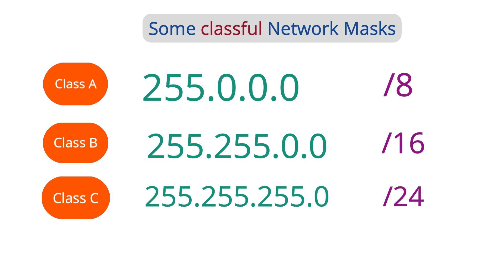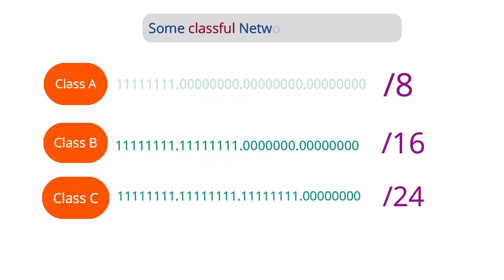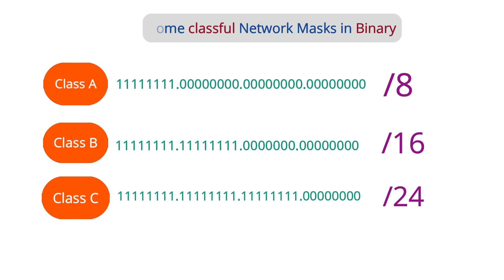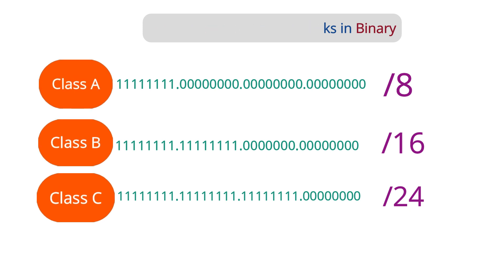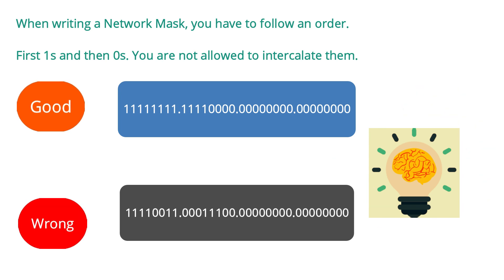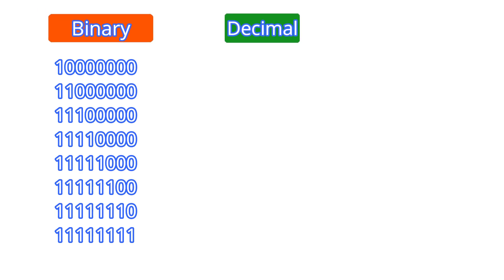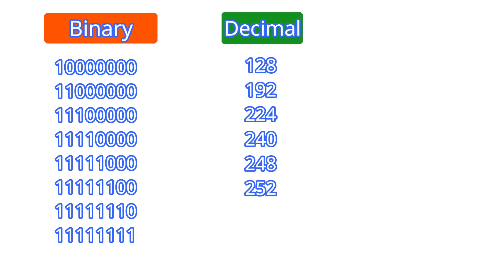The question is why? Well, remember that network masks are composed of 32 bits. If we write a mask in binary, we will see a pattern: we only have 1s and 0s, but they follow an order — first 1s, and then 0s. This is a rule you have to remember. In a network mask, you cannot interpolate 1s and 0s. The rule is simple: first 1s and then 0s. That's why we can only work with those specific numbers.